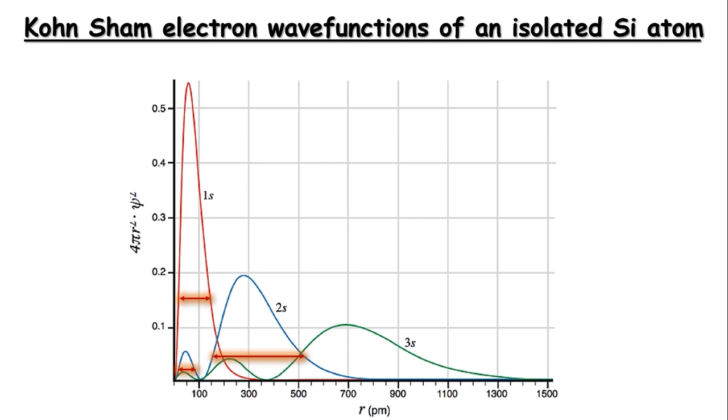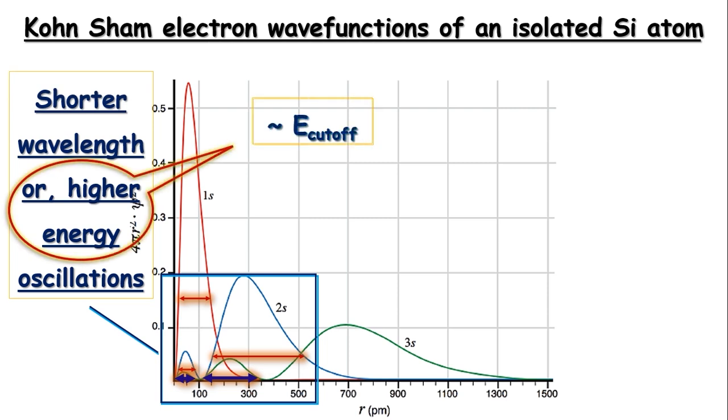Not only the core electrons, but also the valence electron, that is 3s, has a wave function near the nucleus that is also of shorter wavelength. Now these oscillations actually often become comparable to the value of the cutoff energy that is generally taken in nowadays DFT calculations.